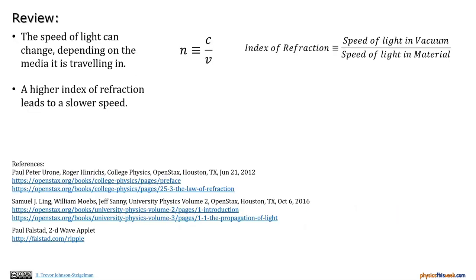Okay. So in review, we've got the speed of light can change depending on the media that you're in. The definitional equation of this is n equals c over v or the index of refraction is the speed of light in vacuum divided by the speed of light in the material. And if you look at that carefully, you can see that having a higher index of refraction leads to a lower speed. And conversely, a lower index of refraction represents a faster speed.